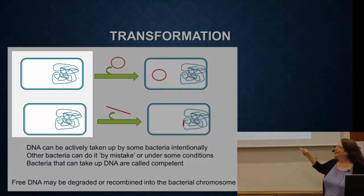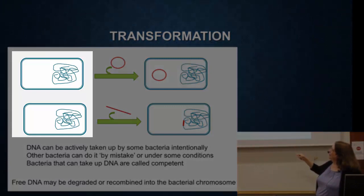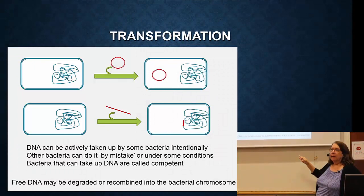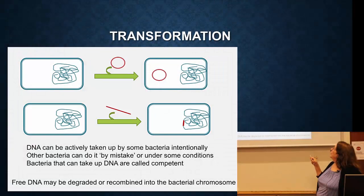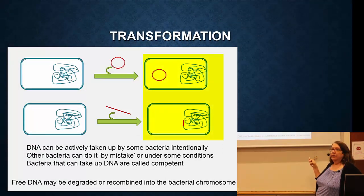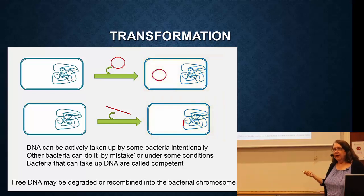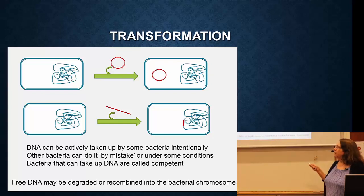What is actually happening is this: here's one cell and here's another cell. Some cells can take up DNA, either as circles which we call plasmids, or as linear DNA - just pieces of DNA - and incorporate them either as plasmids or integrate them into their own chromosome. They can be actively taken up by some types of bacteria like the ones in the experiment I just showed, or some bacteria do it by mistake. In the lab, we can also induce some bacteria to do this. The cells that take up the DNA we call competent.